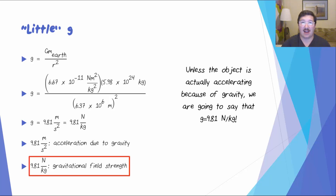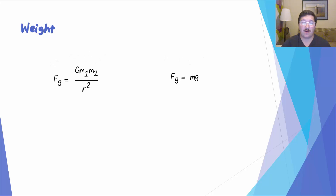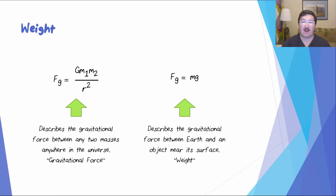Unless the object is actually accelerating because of gravity, we say that g equals 9.81 newtons per kilogram. Here we have two equations for Fg: the first, Fg equals G M1 M2 over R squared, describes the gravitational force between any two masses anywhere in the universe — we call this the equation for gravitational force. The second, Fg equals mg, describes the gravitational force between Earth and an object near its surface — we call this the equation for weight.